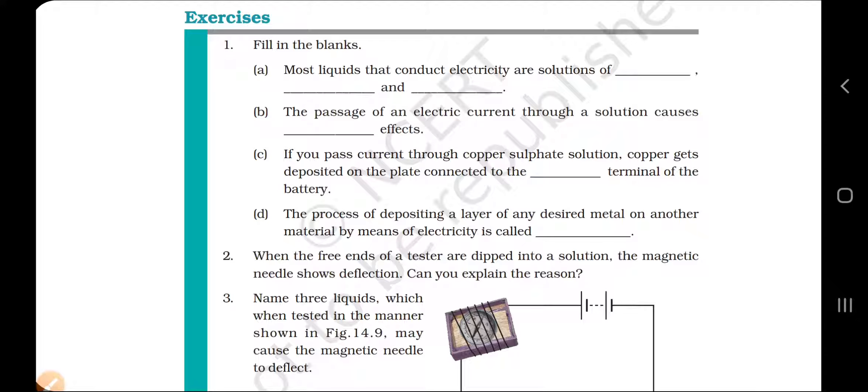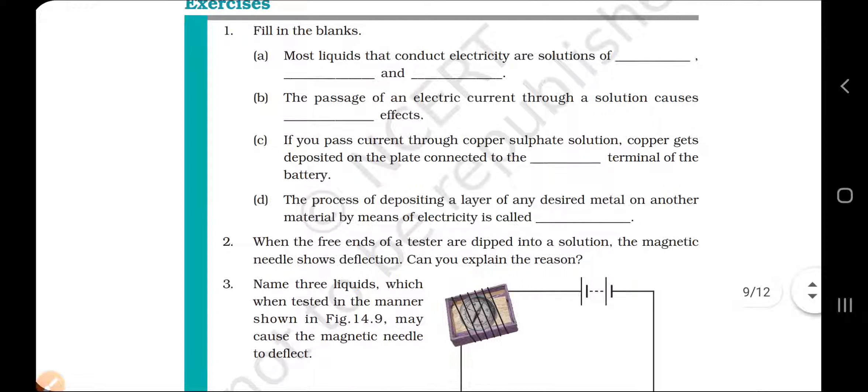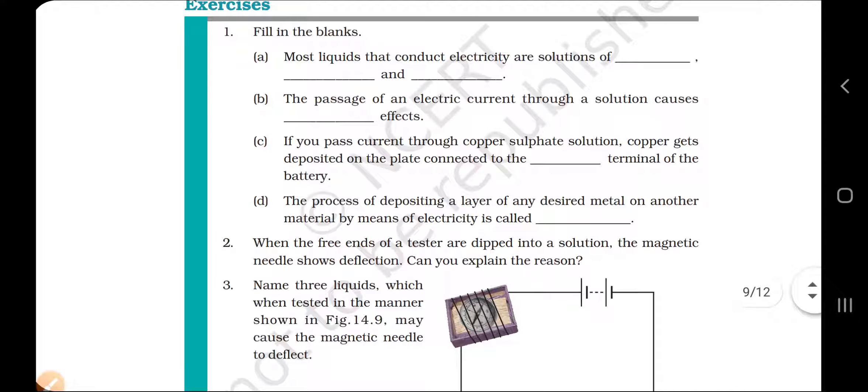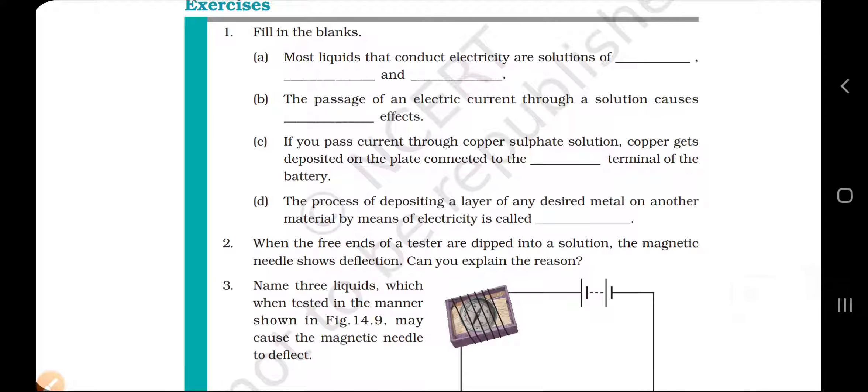The process of depositing a layer of desired metal on another material by means of electricity is known as electroplating. So number 1 is acid, bases and salt. Number B is chemical. Number C is negative. Number D is electroplating.